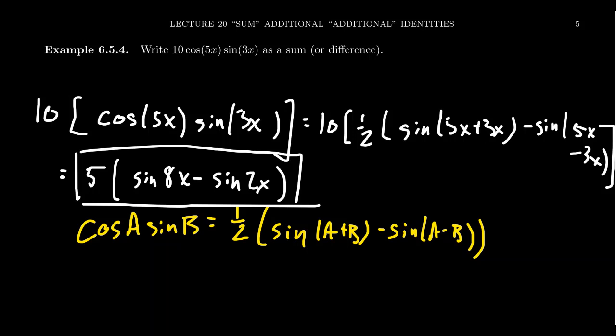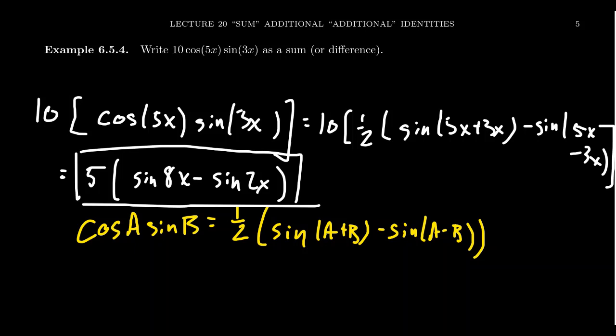So if you're ever in a situation where you have a product of trig functions but would rather have a sum or difference, you can use the product-to-sum identities. For example, in calculus there will be situations where you want to integrate 10 cos(5x) sin(3x) — that's a really hard integral — but in the transformed form it's actually a pretty easy integral. Trigonometric identities allow you to switch from one form to another and use whichever is more convenient. Like the Karate Kid learning wax-on, wax-off and painting the fence out of context, we're learning these techniques for calculus — and I promise when the moment comes, you'll be prepared.